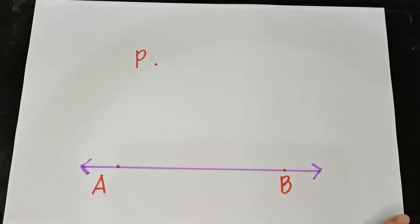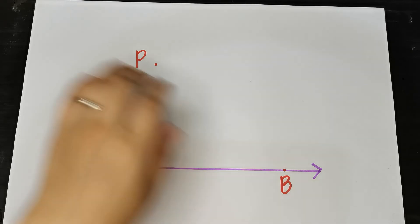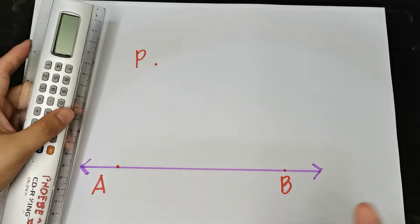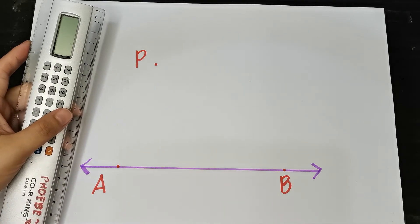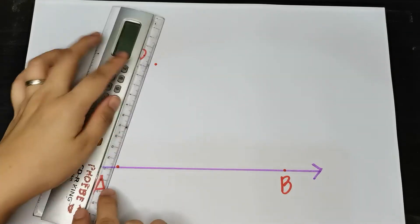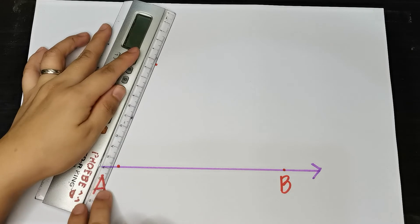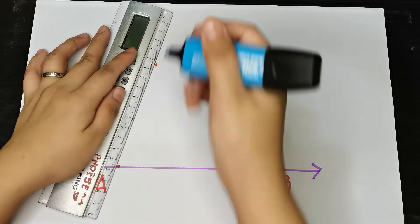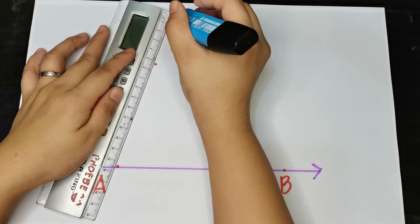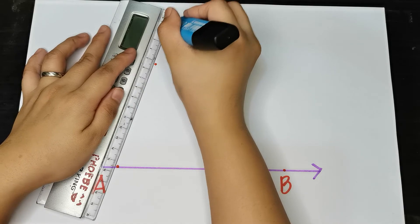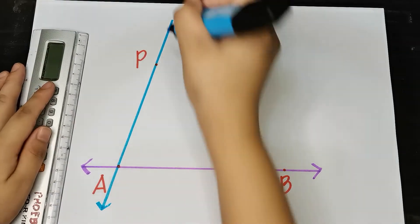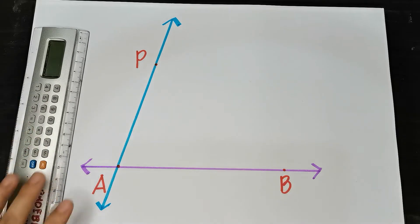So we draw a transversal line. A transversal is a line that intersects two lines that are parallel. Now we connect our two points — points P and A. So clearly, you have a transversal already.